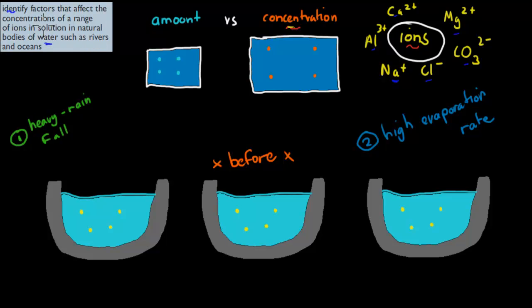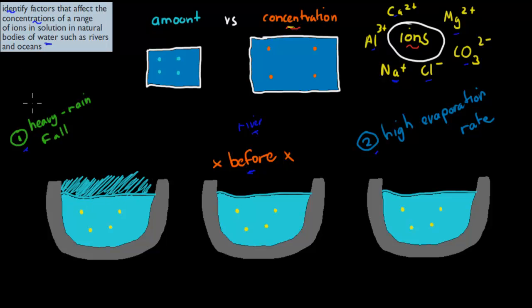So we have to talk about what could actually affect the concentrations of certain ions in bodies of water, such as rivers and oceans. For example, let's say we have a river here — this is how much water there will be in this river before something happens. There are two scenarios. Either we have heavy rainfall, or high evaporation rates. If you have heavy rainfall, we will have a lot more water in that actual river, which means the concentration of those ions is going to be lower. Because we've got more water and the same amount of ions, the concentration has gone down. So heavy rainfall can make the concentrations of ions more dilute.